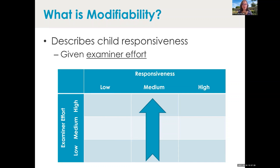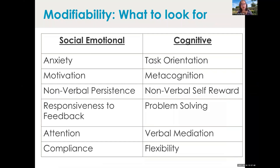We might have high effort on the part of the examiner and medium responsiveness. It's really important to think about our own level of effort and how responsive the child is given that level of effort. It turns out that modifiability is very predictive of children's ability in the linguistic domain. Kids with DLD tended to have lower responsiveness or lower modifiability, so I've been working on how to identify what's involved in child modifiability.